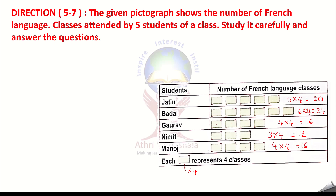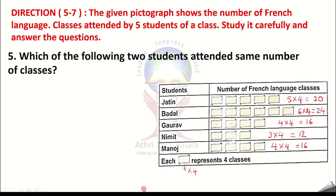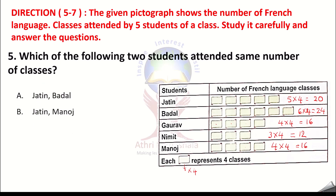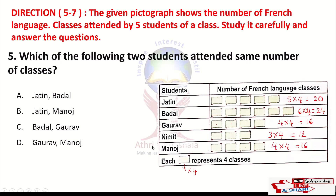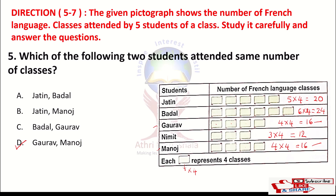Question 5: which of the following two students attended the same number of classes? Both Gaurav and Manoj attended 16 classes each. So Gaurav and Manoj — Option D — is the correct answer.